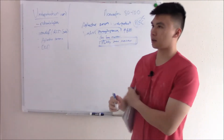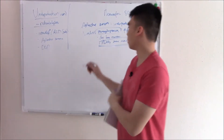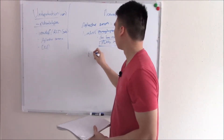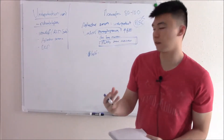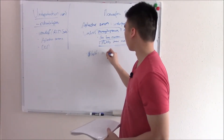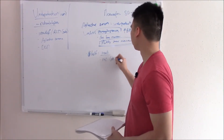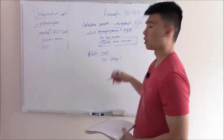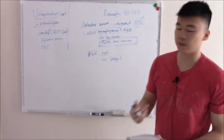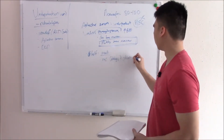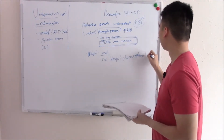What causes aplastic anemia? Unfortunately, half the cases are unknown. The other half are due to autoimmune destruction of bone marrow or some insult to the bone marrow. The most common known cause is drugs — such as chemotherapy drugs. A big one to know is the antibiotic chloramphenicol.